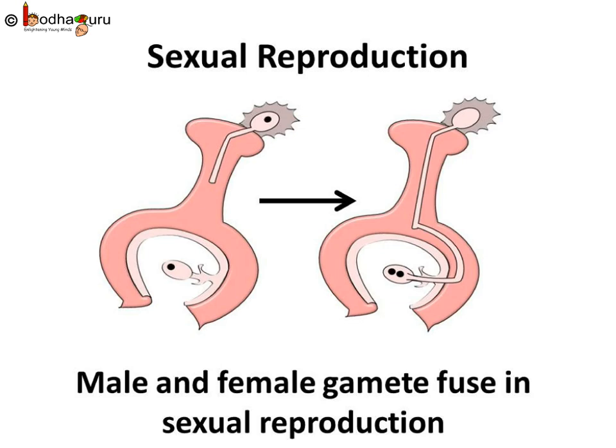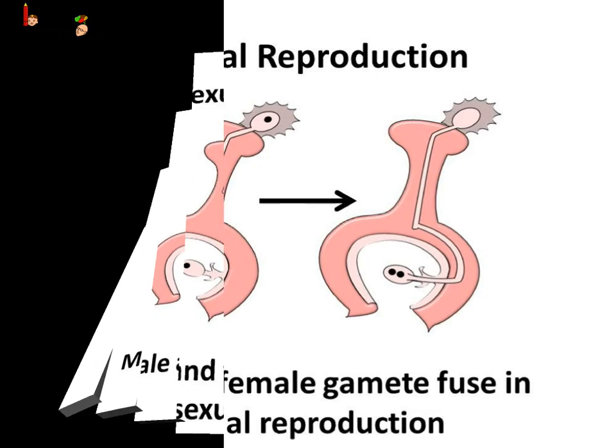Sexual reproduction is common in animals too, and the process is the same — which means a male gamete and female gamete fuse to create a zygote, and then the zygote turns into an embryo.